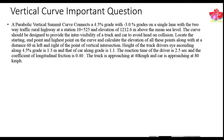A parabolic summit curve connects a +4.5% grade with a -3% grade on a single lane two-way traffic rural highway at station 10+525 and an elevation of 1212.6 meters above mean sea level. The curve will be designed to provide inter-visibility of a truck and car to avoid head-on collision. Locate the starting point, end point, and highest point on the curve, and calculate the elevation of these points.